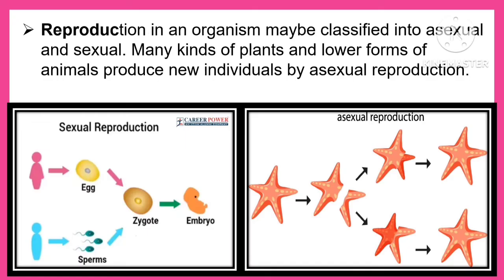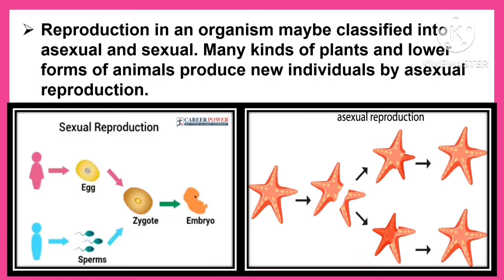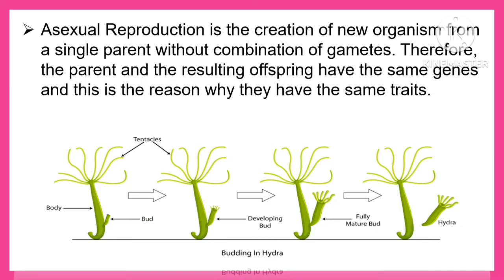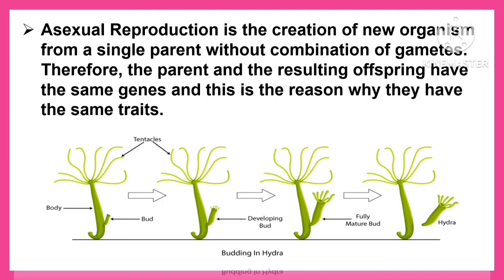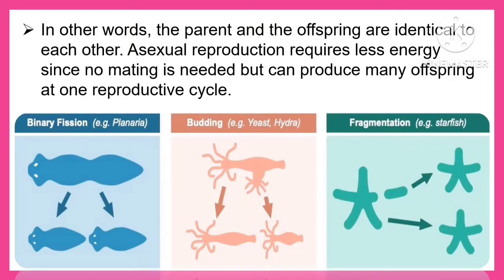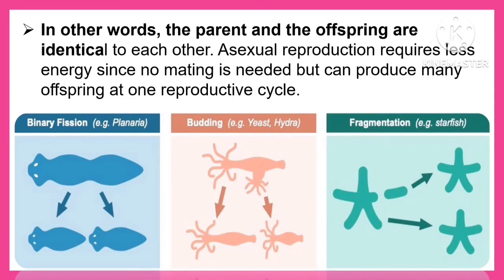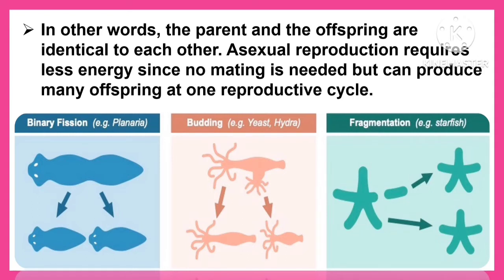Reproduction in an organism may be classified into asexual and sexual. Many kinds of plants and lower forms of animals produce new individuals by asexual reproduction. Asexual reproduction is the creation of a new organism from a single parent without combination of gametes. Therefore, the parents and the resulting offspring have the same genes, which is the reason why they have the same traits. In other words, the parent and the offspring are identical to each other. Asexual reproduction requires less energy since no mating is needed, but can produce many offspring in one reproductive cycle.